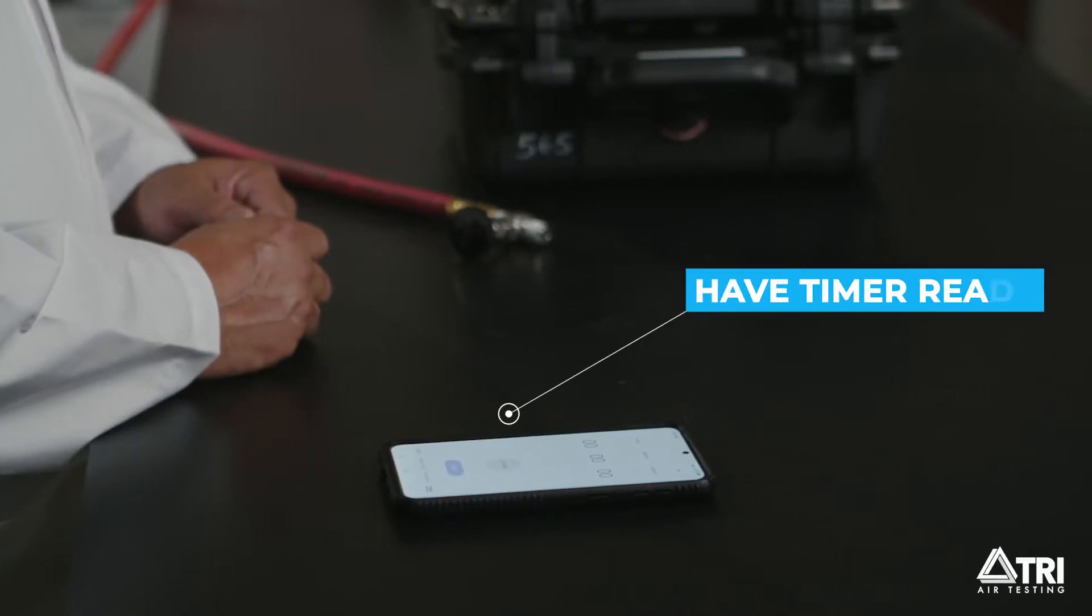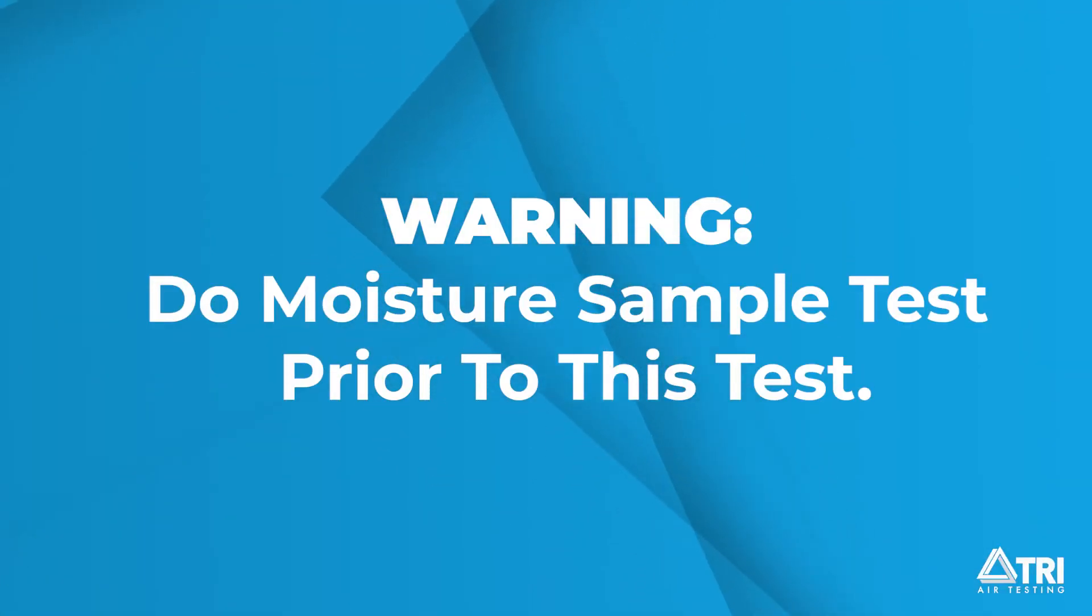Before we begin, make sure you have a timer handy. If a moisture sample is to be obtained, go to moisture sampling and perform the test before continuing with this air sampling test.